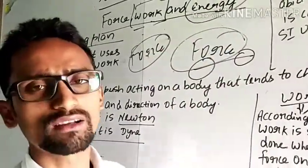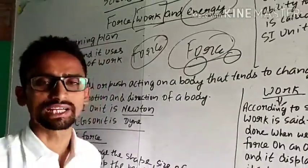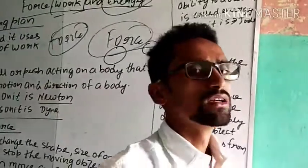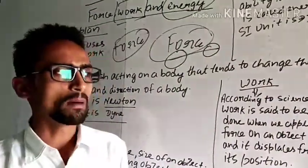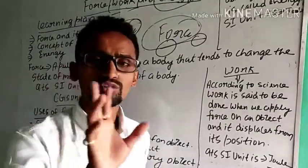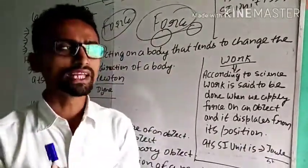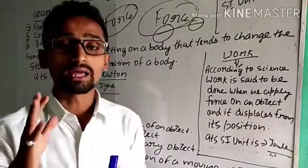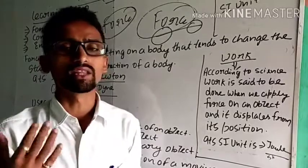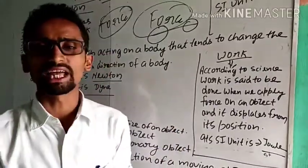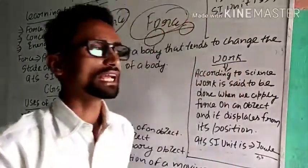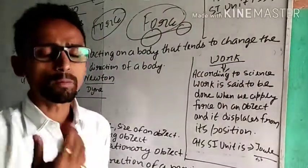How can force change the direction of a moving object? By taking an example — suppose in cricket, a bowler bowls. When a bowler bowls, he applies a force on the ball. Then the batsman hits the ball and exerts force on it, and the ball goes in another direction. So force can change the direction of an object. Just like that, force can also stop a moving object.